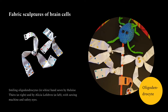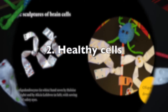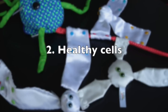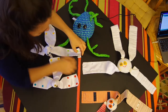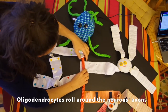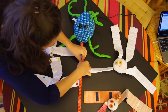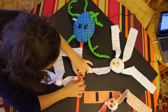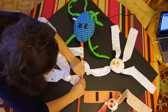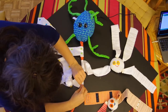Among the glial cells, oligodendrocytes help the spreading of the electrical message through the nervous system, and their dysfunctioning has implications in multiple sclerosis. Oligodendrocytes roll around the neurons' axons. The white sheath that appears is called the myelin sheath, which gives its name to the brain's white matter.